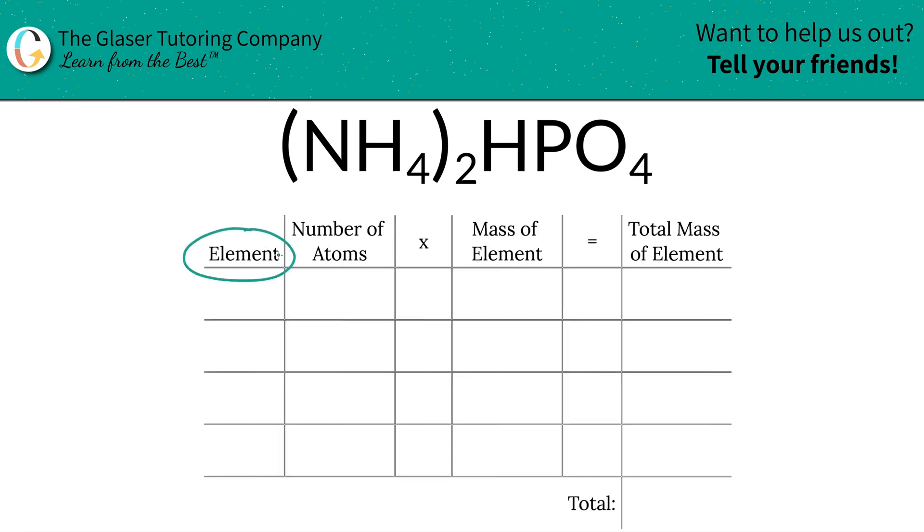So the first thing I'm going to do is write down the individual elements I see in the compound. So we've got nitrogen, we've got hydrogen, we've got phosphorus, and we've got oxygen.